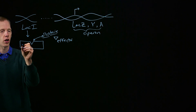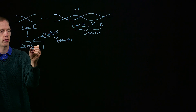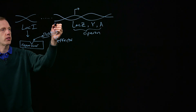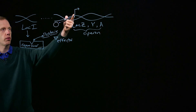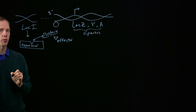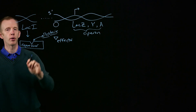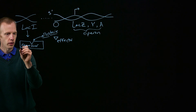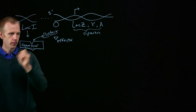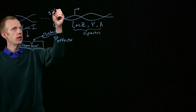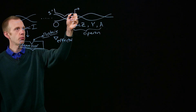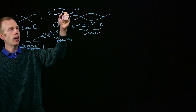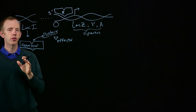LacI, the gene, encodes the protein called lac repressor. What lac repressor does is bind to a site in the promoter region upstream in the five-prime direction of the transcription start site, called the lac operator, denoted as O. Lac repressor normally has a shape that allows it, as soon as it is produced, to bind to the operator.